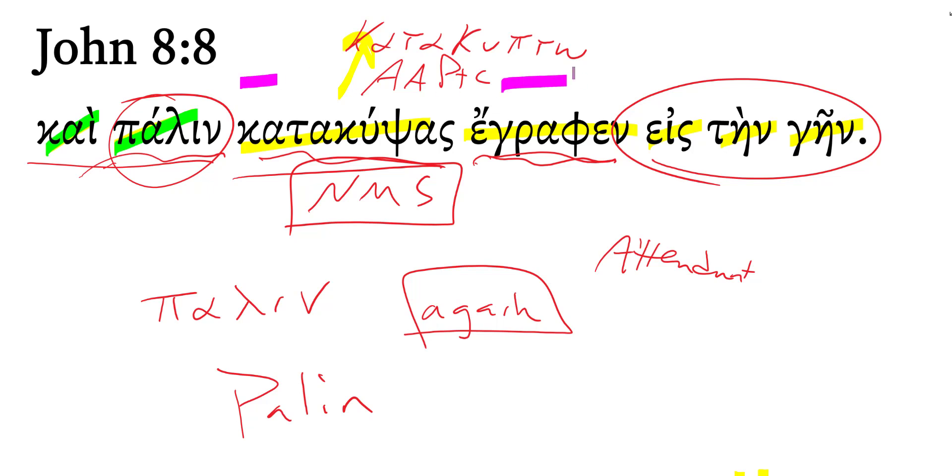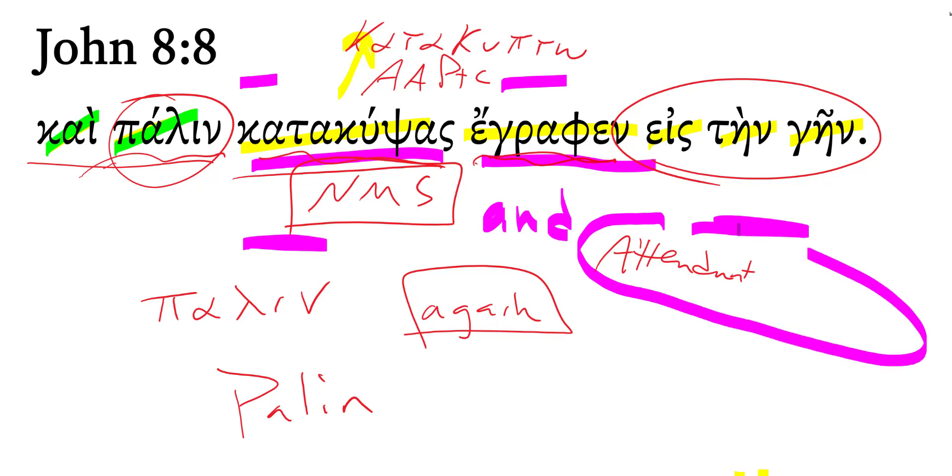And again, he bent over again and wrote on the ground, is how the Net Bible translates it, or the ESV. And once more, he bent down and wrote on the ground. So you can see how they're providing the word 'and,' and then they're translating the participle just as another verb, alongside the verb writing, judging the participle, an adverbial participle, to be functioning to communicate attendant circumstances.